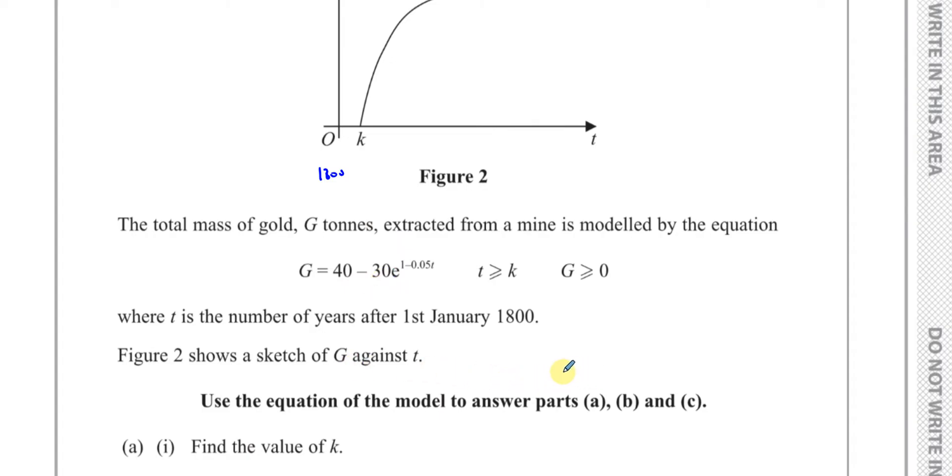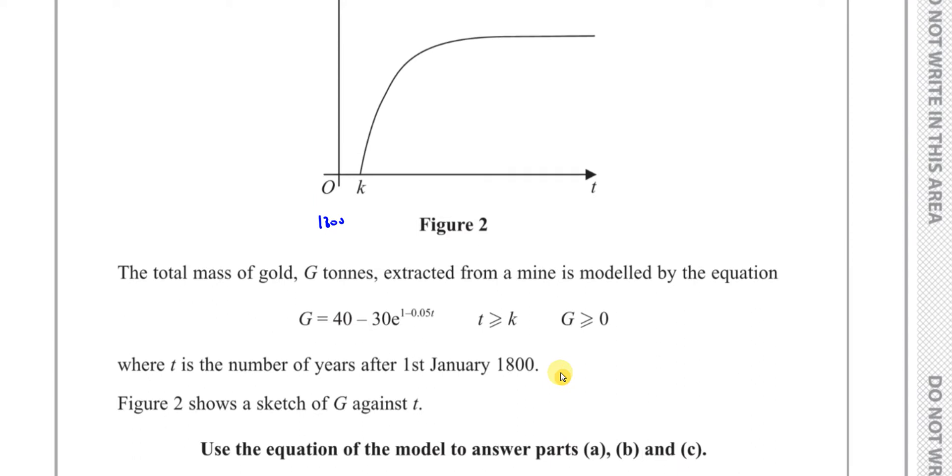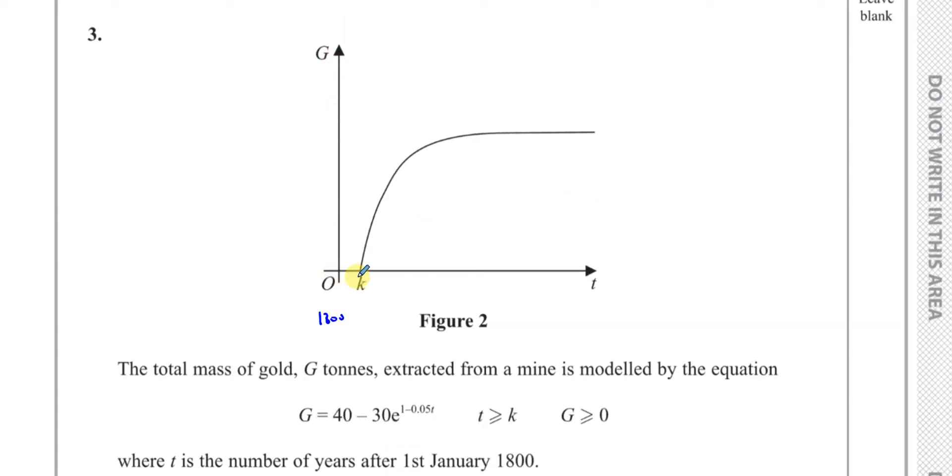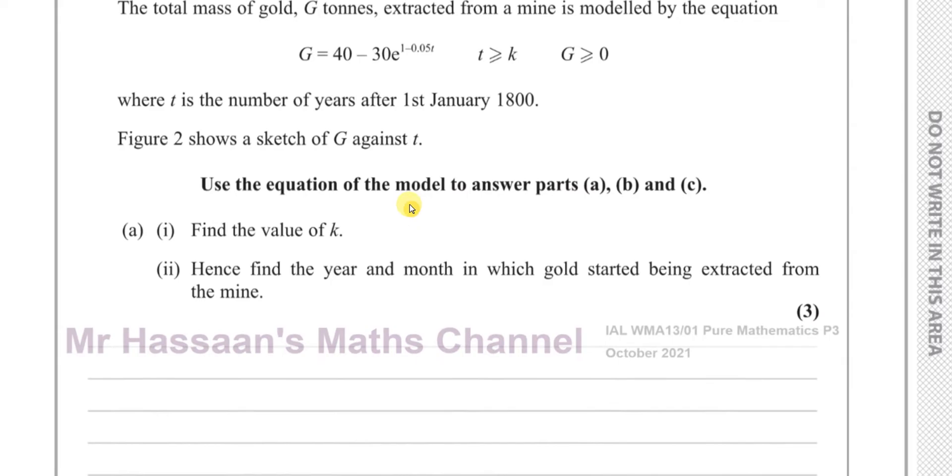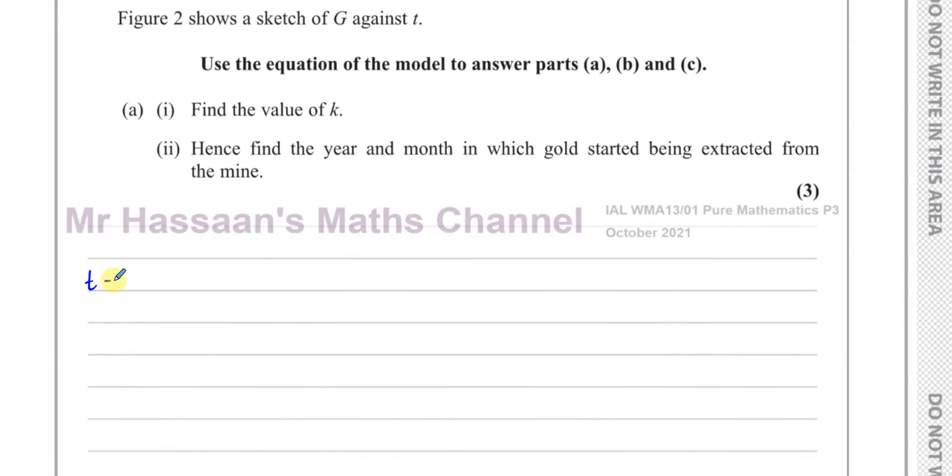Part a(i) says find the value of k. Now k seems to be here the value of t when G equals 0. You can see that on this line, on this particular graph, k is when G equals 0. So what we need to do is substitute t as k and G as 0, because you can see that's the point on the graph k, 0. So if we put that in the equation of the graph.